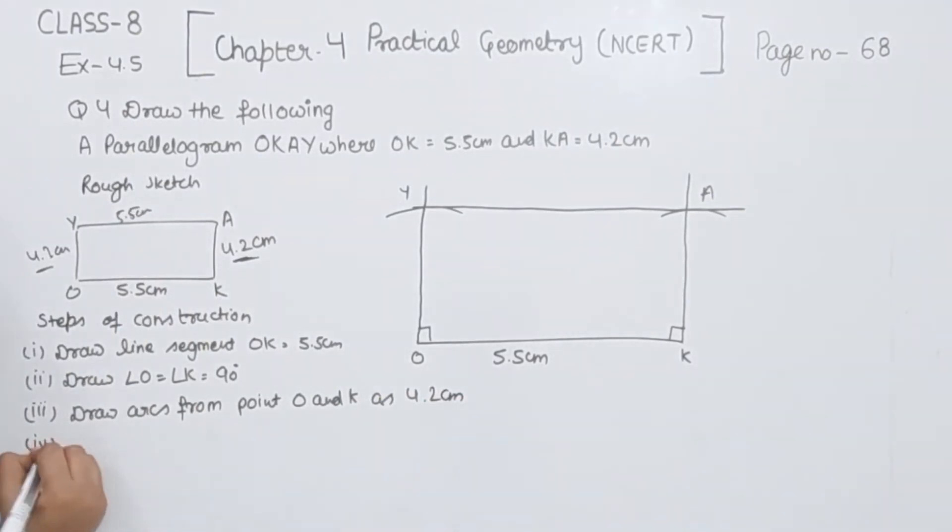Now we are going to join A with Y. So this will be the required parallelogram OKAY. In this one OK is equal to 5.5 cm and KA is equal to 4.2 cm. So this is question number 4. With this one we have completed exercise 4.5 and chapter number 4 practical geometry. In the next video we are going to start with chapter number 5.